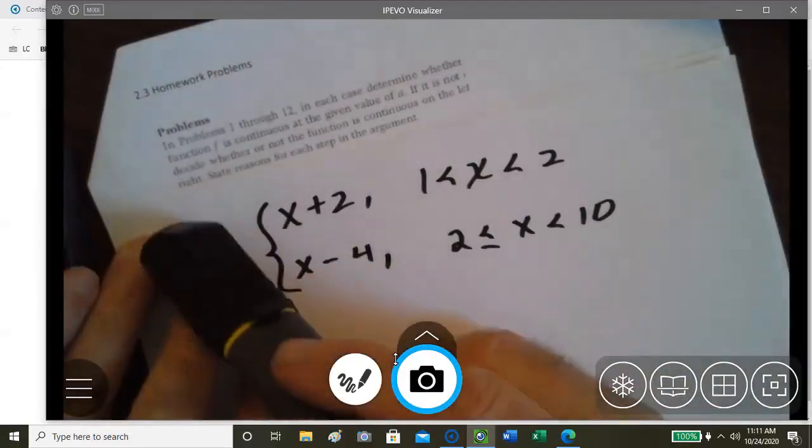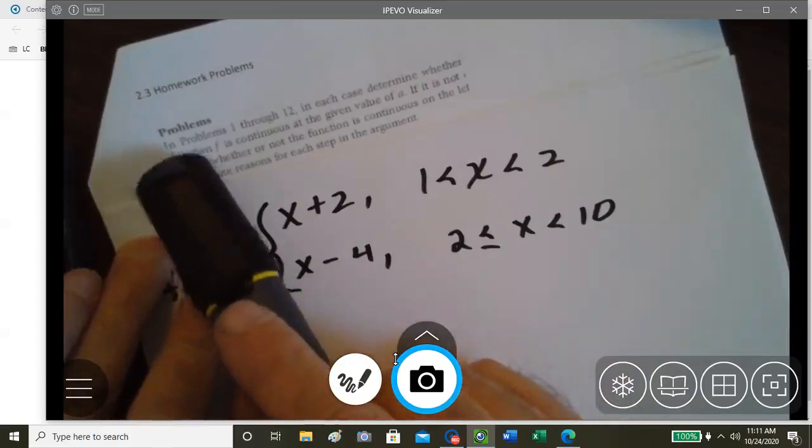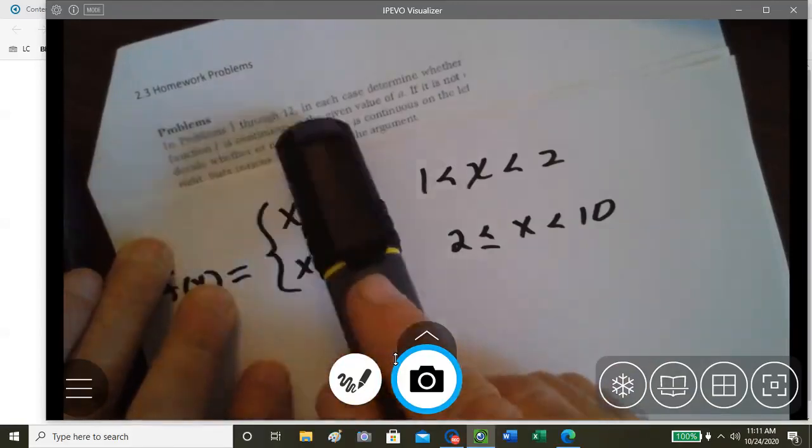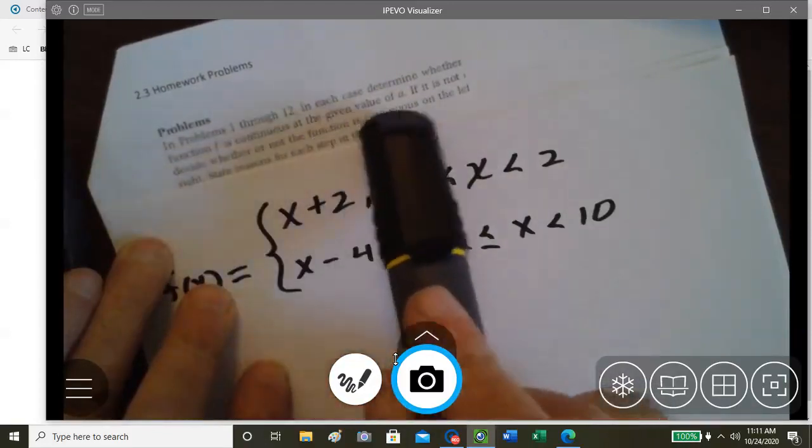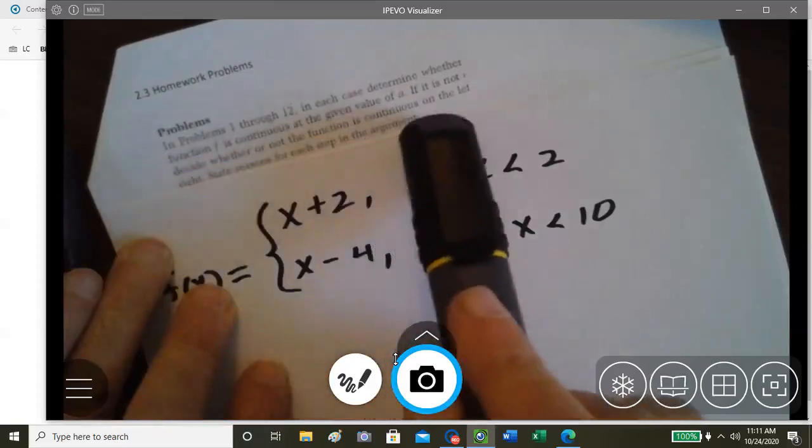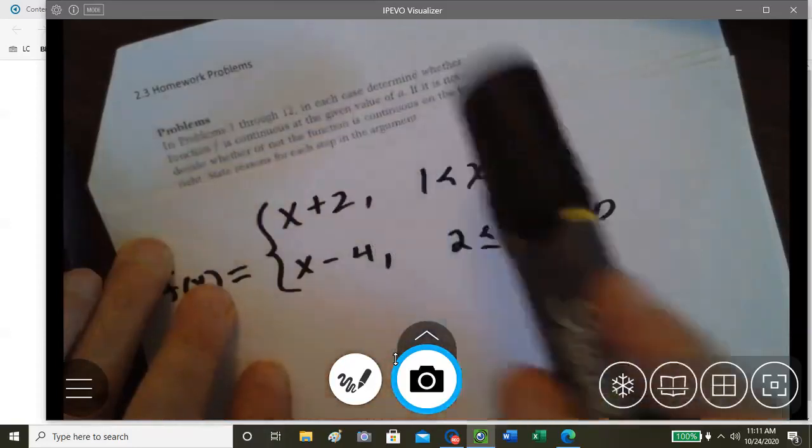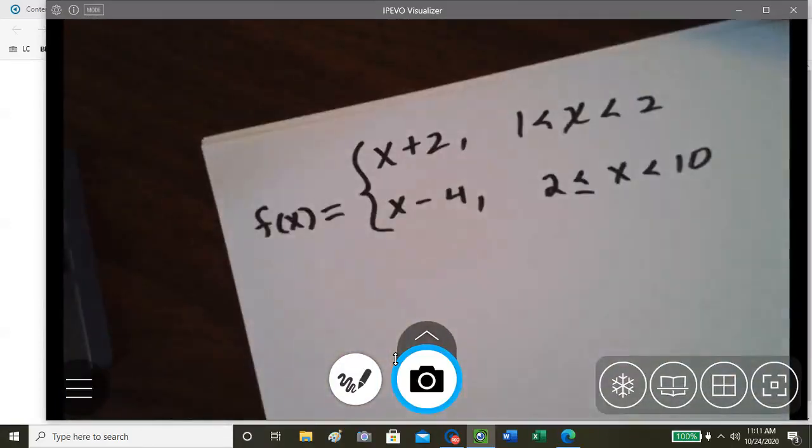Homework video for lesson 2.3. We're looking at problems 1 through 12. We need to determine whether the function f is continuous at a given value of a. If it does not, decide whether the function is continuous on the left or the right and state the reasons for each step in the argument.